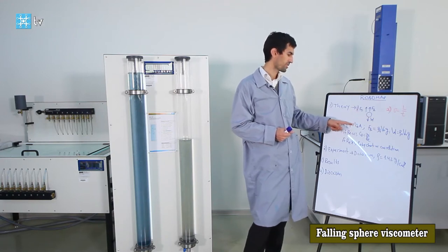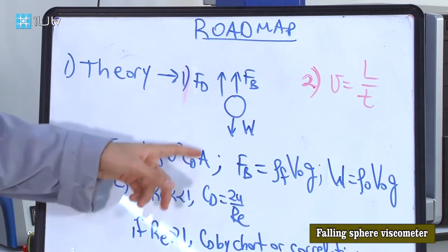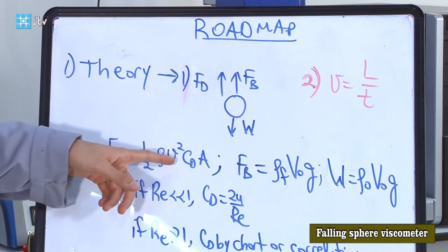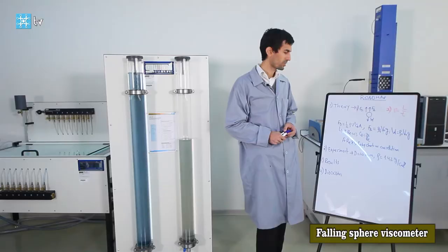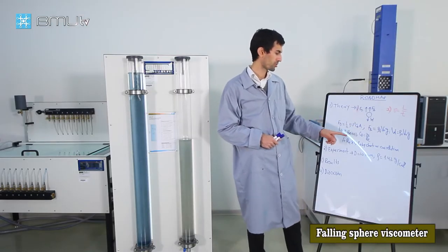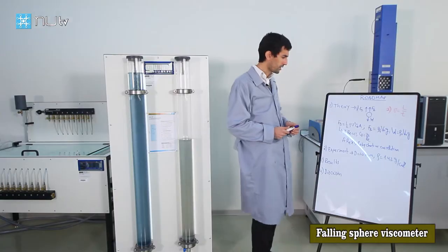In this experiment two methods are possible. In one method, you can find the drag coefficient — you take the viscosity values from a reference table. But if you are interested in the viscosity value and using this as a falling sphere viscometer, then you need to know the drag coefficient from a table, and from that you can find the viscosity of the fluid.